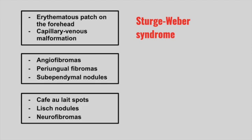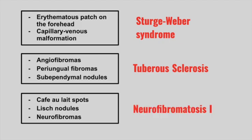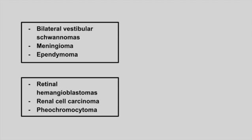Next is a patient who presents with angiofibromas, periungual fibromas, and subependymal nodules. This is tuberous sclerosis. Next is a patient with café-au-lait spots, Lisch nodules, and neurofibromas. This is neurofibromatosis type 1. Next is a patient with bilateral vestibular schwannomas, meningiomas, and ependymomas. This is neurofibromatosis type 2.